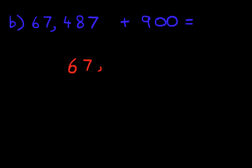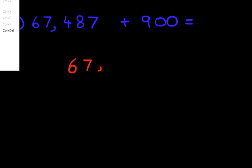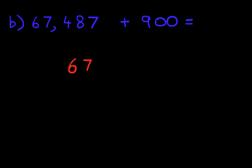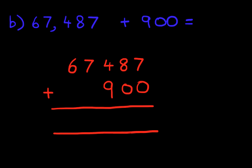67,000. Oops. We can't put the comma in but I'm not going to in this scenario. 67,487 plus 900. Right, we're not going to label the columns this time around. So let's begin.